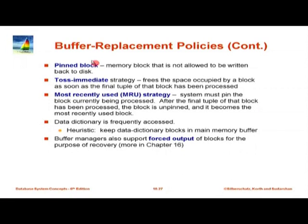Among unpinned blocks, there are multiple replacement policies. For a relation scan, reading one block after another, as soon as you are done with a block you can throw it away — toss-immediate — because you are not going to look at it again. Toss-immediate is closely linked to most-recently-used policy, which pins the current block and throws it out as soon as done. There are some minor differences between the two.